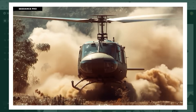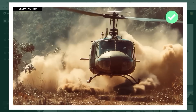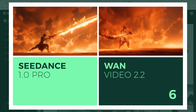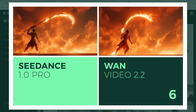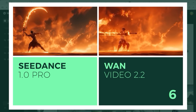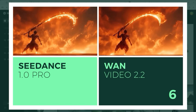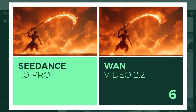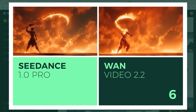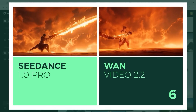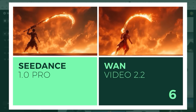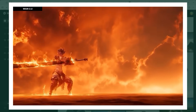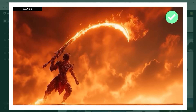Both platforms perform well, but neither gets a clean win. Example 6: a creature made of lava and ash — something like a god of fire — raises a blazing sword for a massive strike. In the C-Dance Pro version, the sword is beautifully rendered but the movement feels a bit stiff. One 2.2, on the other hand, gets more right: the clouds in the background are dynamic and the creature throws its full weight into the motion. You can feel the impact. The point clearly goes to One 2.2.